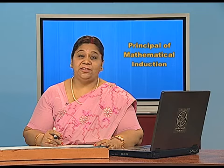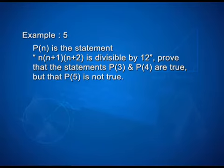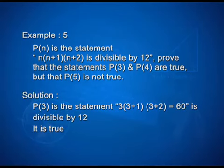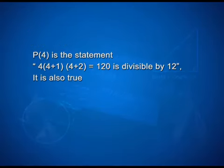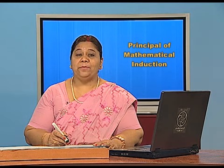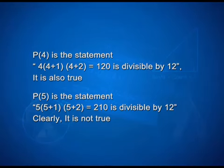Students, look at this interesting example. If P(n) is the statement: n(n+1)(n+2) is divisible by 12, prove that P(3) and P(4) are true but P(5) is not true. P(3): 3×4×5 = 60, which is divisible by 12 — true. P(4): 4×5×6 = 120, which is divisible by 12 — also true. P(5): 5×6×7 = 210. Is 210 divisible by 12? Clearly, it is not true.